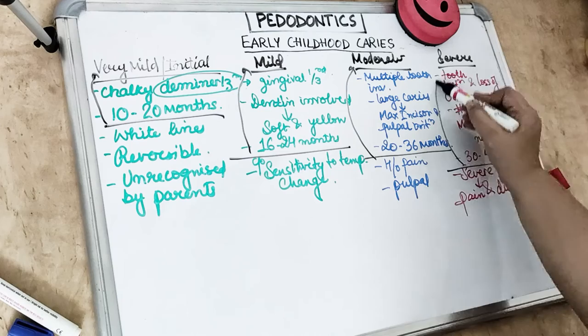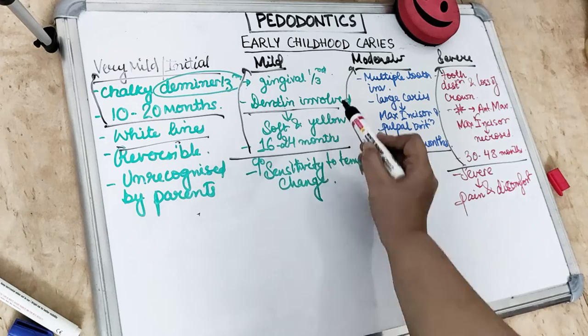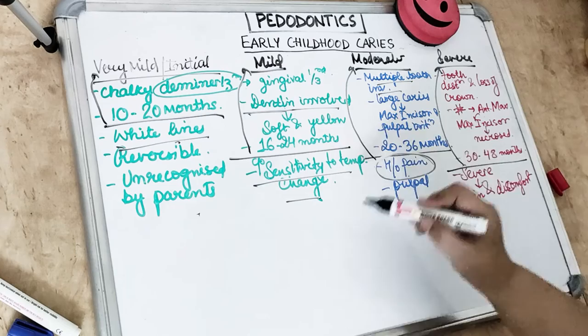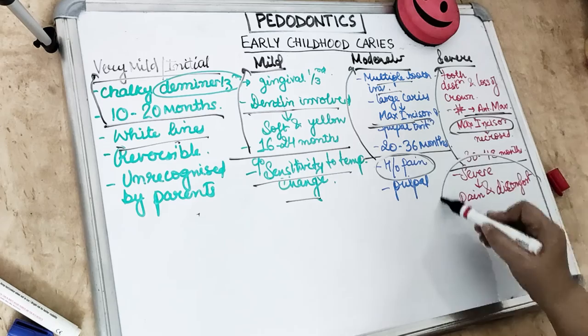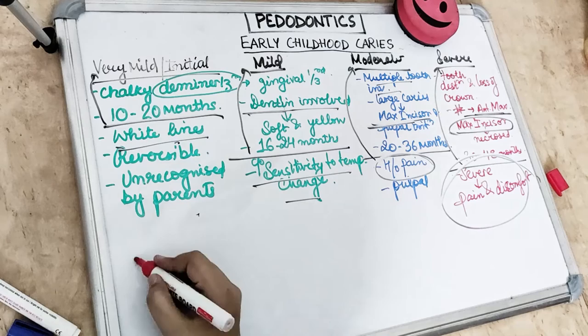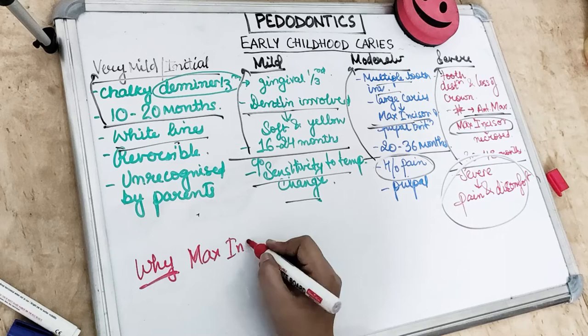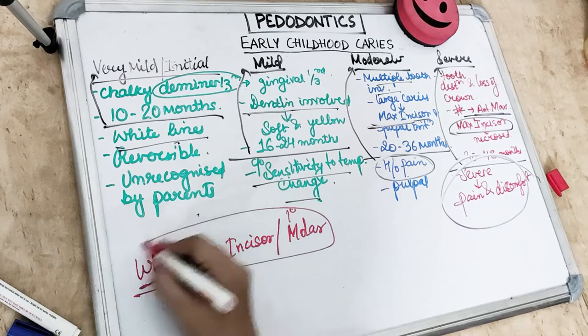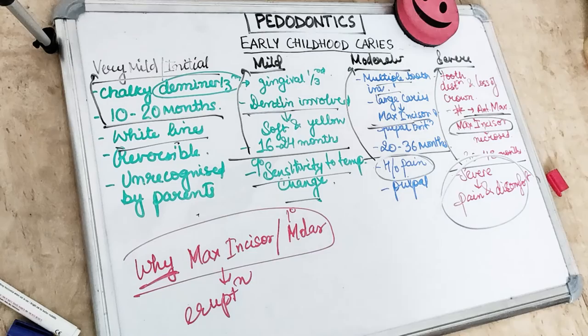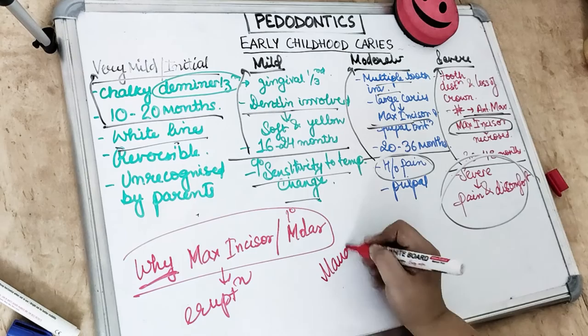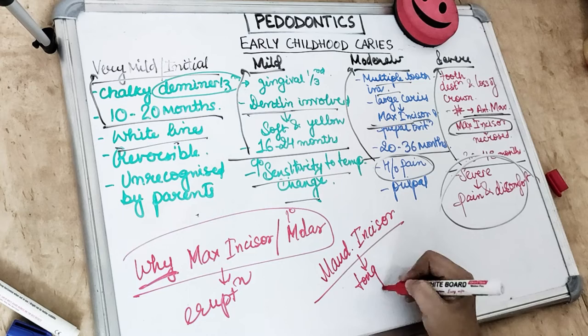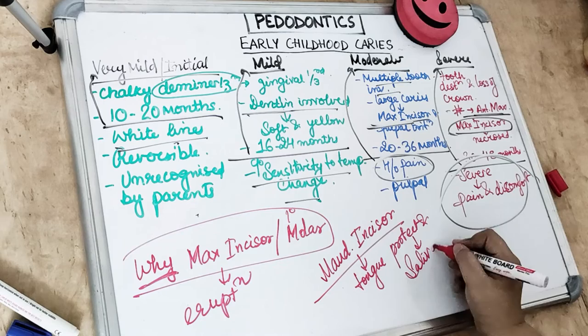In summary: Stage 1 shows white lines at 10–20 months; Stage 2 involves dentine with sensitivity at 16–24 months; Stage 3 shows multiple teeth involvement with pain at 20–36 months; Stage 4 involves severe pain and discomfort at 30–48 months. The maxillary incisors and primary first molars are most affected due to their early eruption and vulnerable position. Canines and second primary molars are seldom involved due to their late eruption, while mandibular incisors are least involved because the tongue and saliva protect them.